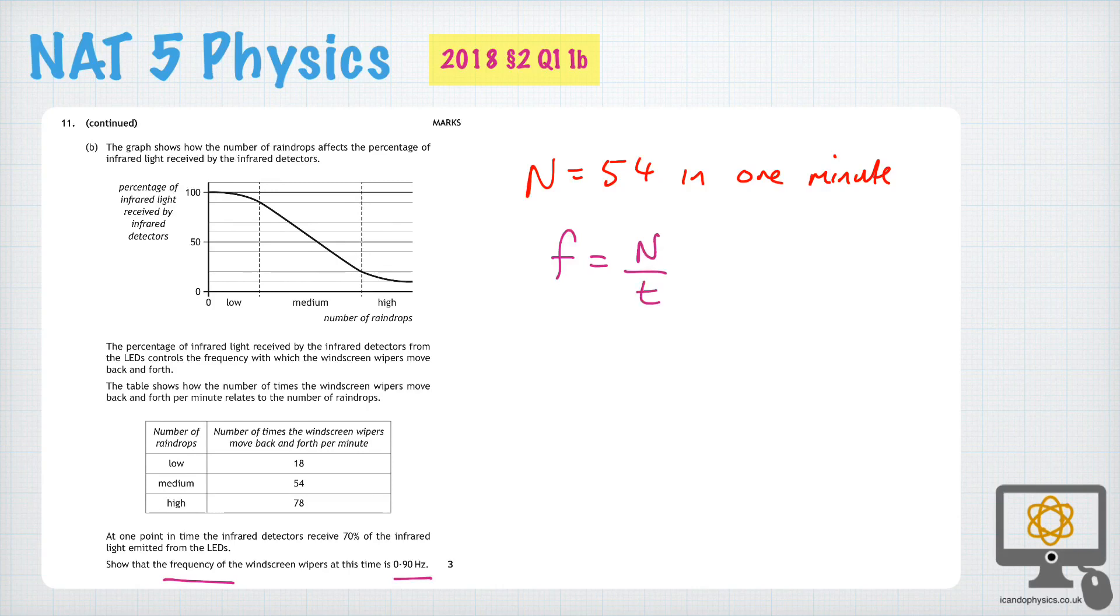Well, according to what we've just analyzed, there are 54 vibrations in one minute, and one minute is 60 seconds. And so when we do that calculation, we get a value of 0.90 Hz.